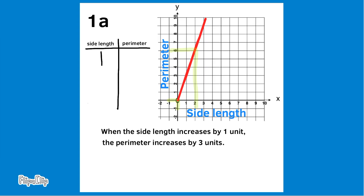Let's put this information in a chart. The left column is side length and the right column is perimeter. When the side length is 1, the perimeter is 3; when the side length is 2, the perimeter is 6; when the side length is 3, the perimeter is 9. In this situation, the slope represents the sum of all three sides of the triangle.